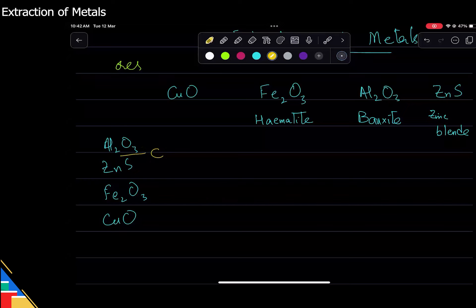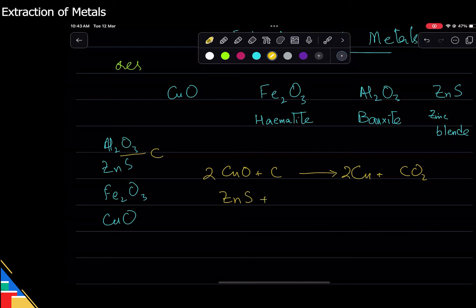So if I put copper oxide with carbon, technically carbon should displace it and I should get copper plus carbon dioxide. Of course I'll balance it, but do you remember the reactivity series and the displacement principle that we talked about? So that can apply here. We can get pure copper out of this. We can also do the same thing with zinc and we can get CS2 plus zinc.